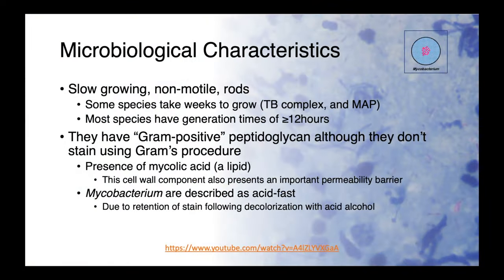In the genus, mycobacterium are slow-growing, non-motile rods. In fact, some of them are so slow-growing that it can take weeks to grow, both the tuberculosis complex, but more notably the mycobacterium avium paratuberculosis complex. Most species have generation times that are greater than 12 hours — very slow when you compare that to E. coli with a doubling time of only 20 minutes.